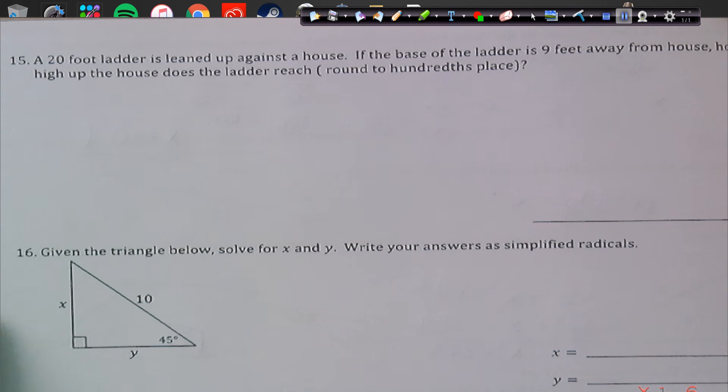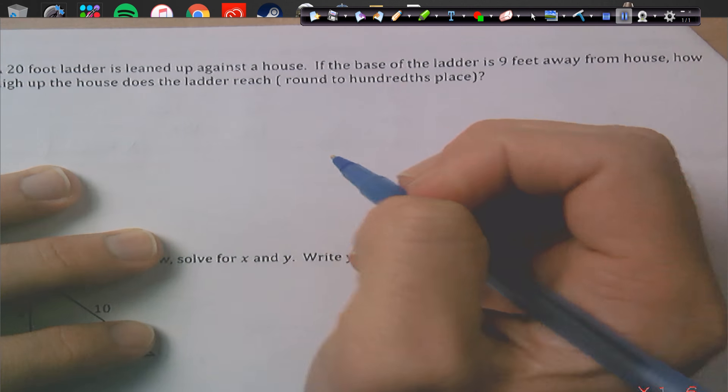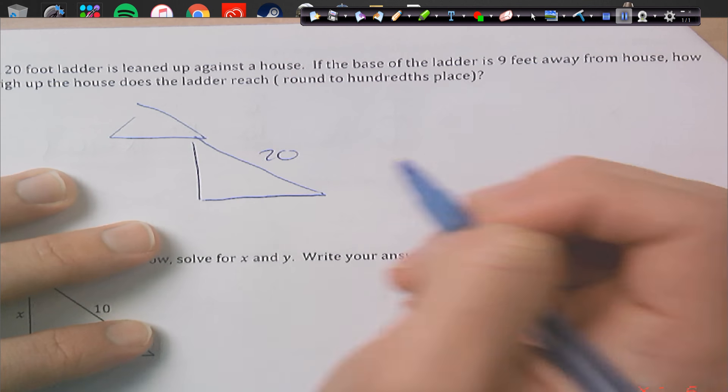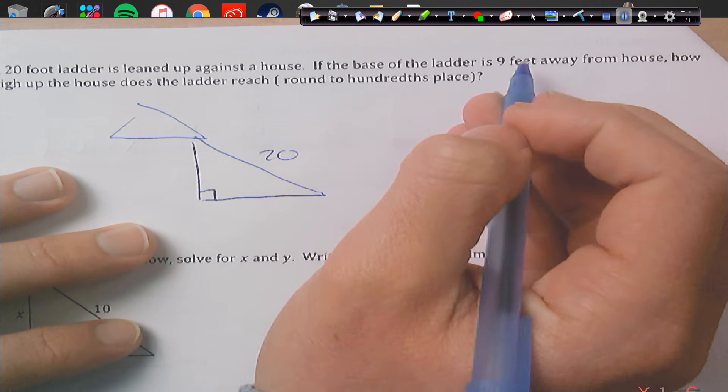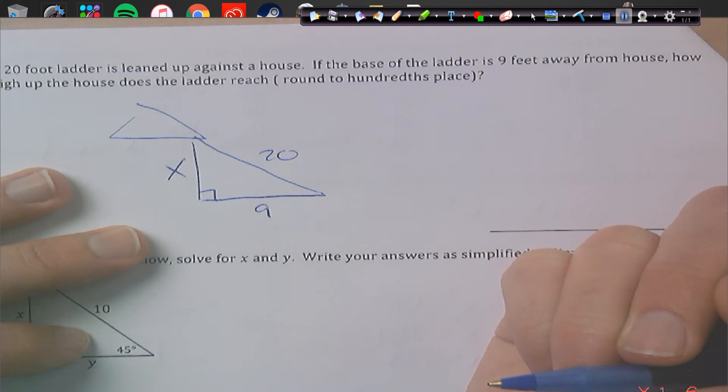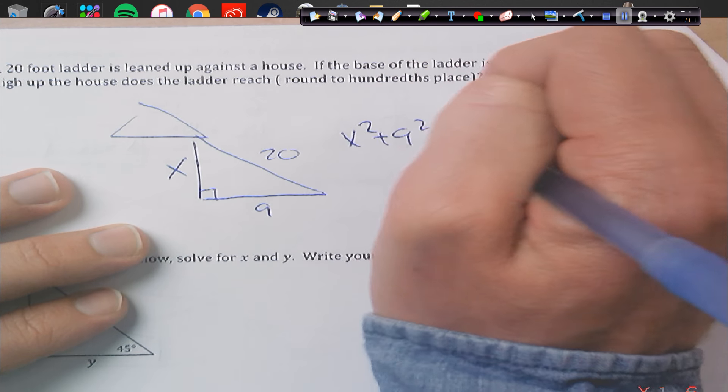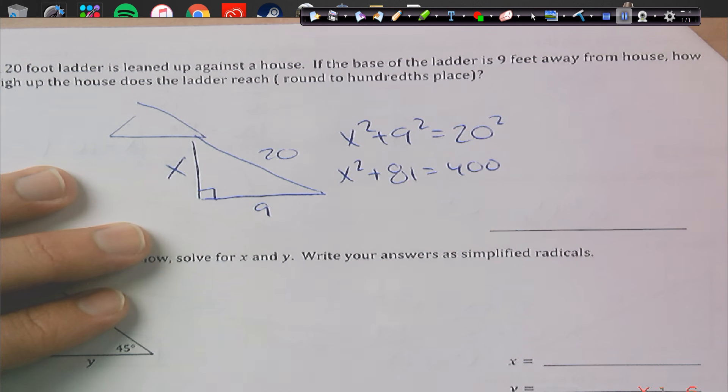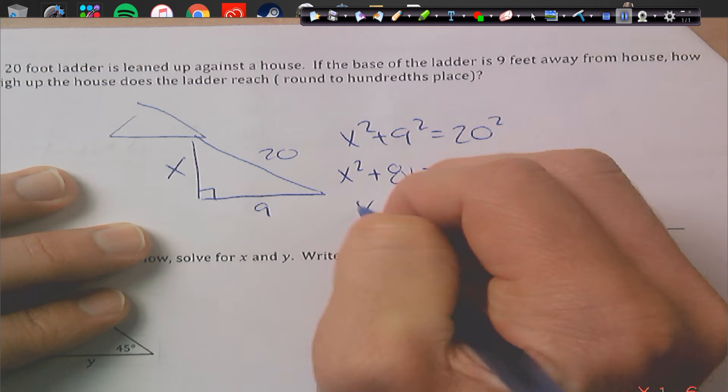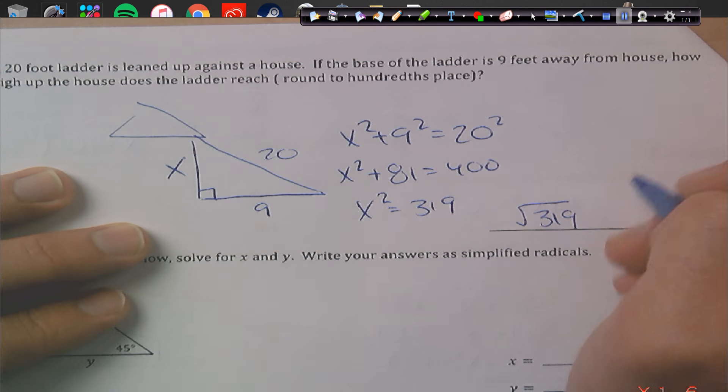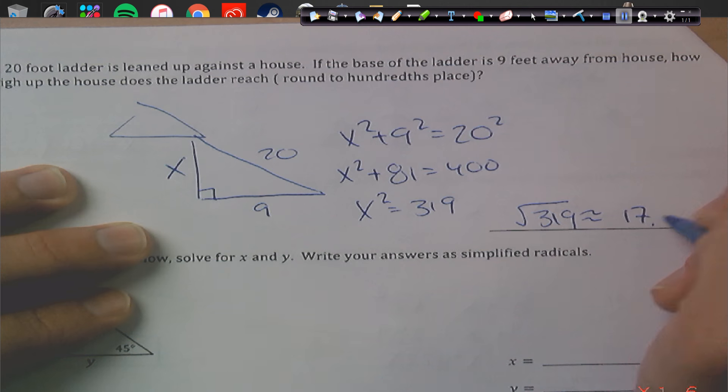A 20-foot ladder is leaned up against the house. The base of the ladder is 9 feet away from the house. How high up the house does the ladder reach? Okay, so, this is our house right here. Here's our ladder. It's 20 feet. It's leaned up against the house. The house is hopefully 90 degrees with the floor. It's 9 feet away from the house. How high up does the ladder go? Okay. Well, we can solve this using Pythagorean theorem. So, x squared plus 9 squared equals 20 squared. And so that's going to be x squared plus 81 equals 400. Subtract 81 from 400. And we get 319. And then we can square root that answer. And that does not leave us with anything. We're out to the nearest hundredth place. So, we're going to get about 17.86. And that's going to be in feet.